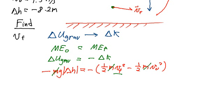so we need to do a little rearranging. The minus signs go away on both sides, so we have g times delta h is equal to 1/2 v_f squared minus 1/2 v_0 squared.